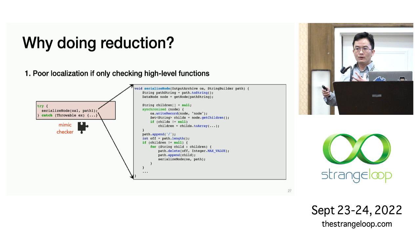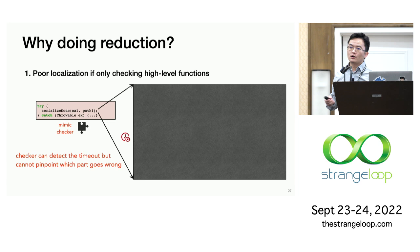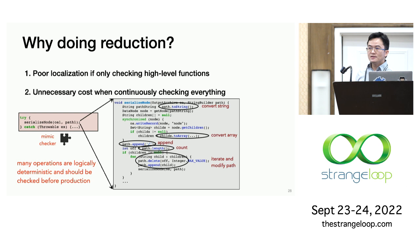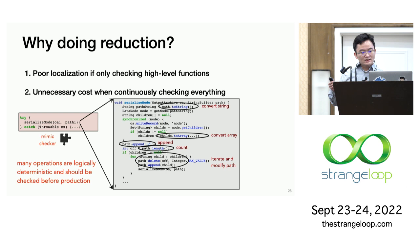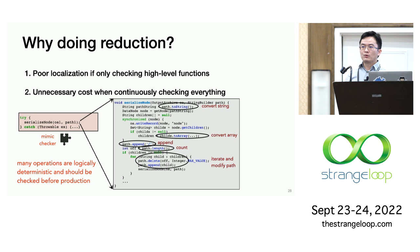You might wonder why we want to do reduction. An alternative option is to invoke some high-level functions of the main program inside our checker, which will execute all the code in those functions. Although such a checker may expose issues, this code region can be too large to narrow down where the problem is. Another reason for reduction is that continuously checking everything at runtime incurs unnecessary costs. Many operations' correctness is actually logically deterministic — like converting a string, sorting an array, or appending a path. Those operations are usually well tested offline already. While they can still be buggy, continuously monitoring them at runtime in a watchdog will likely yield diminishing returns. Given limited runtime checking resources, we should prioritize other operations.